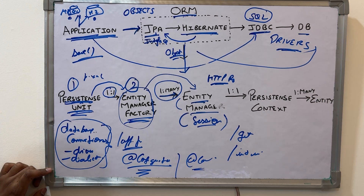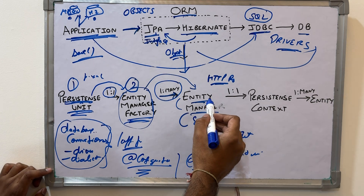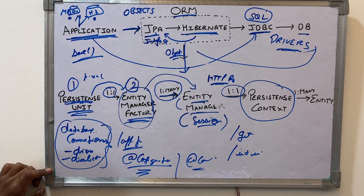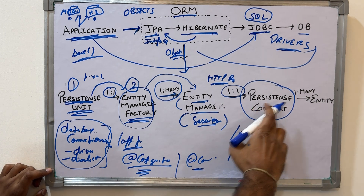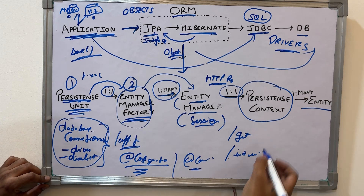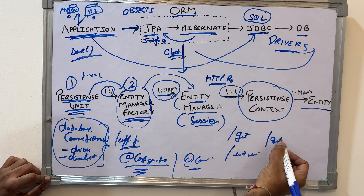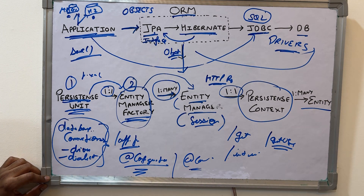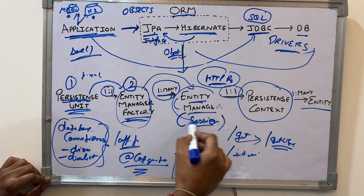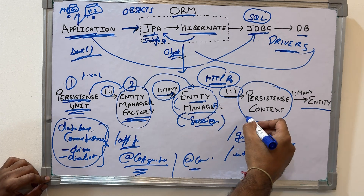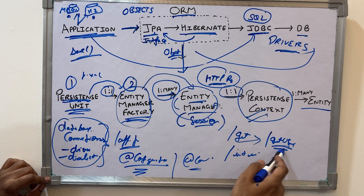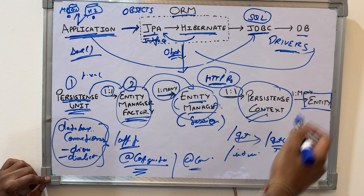One important thing: for each Entity Manager there is something called a Persistence Context. This Persistence Context holds information about the entity we are working on. For example, when you hit a GET user request, one HTTP request creates one Entity Manager, and for each Entity Manager a Persistence Context is also created.